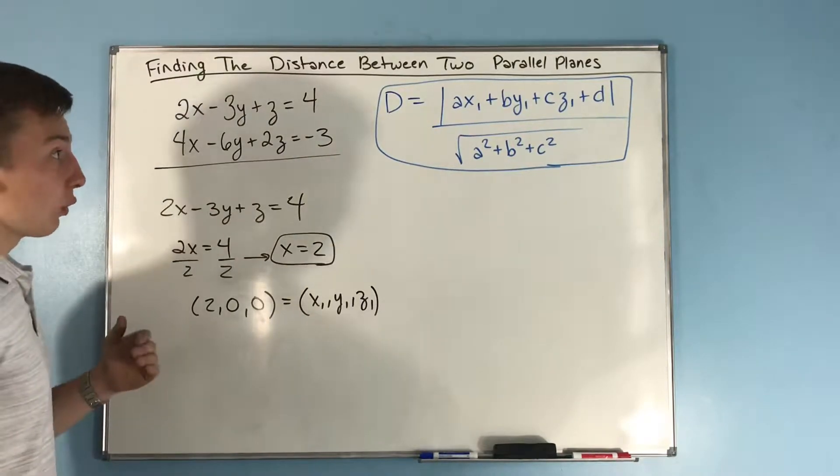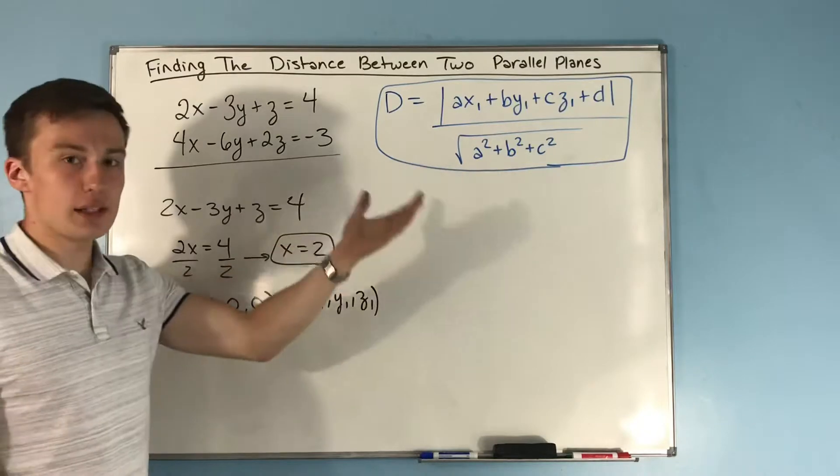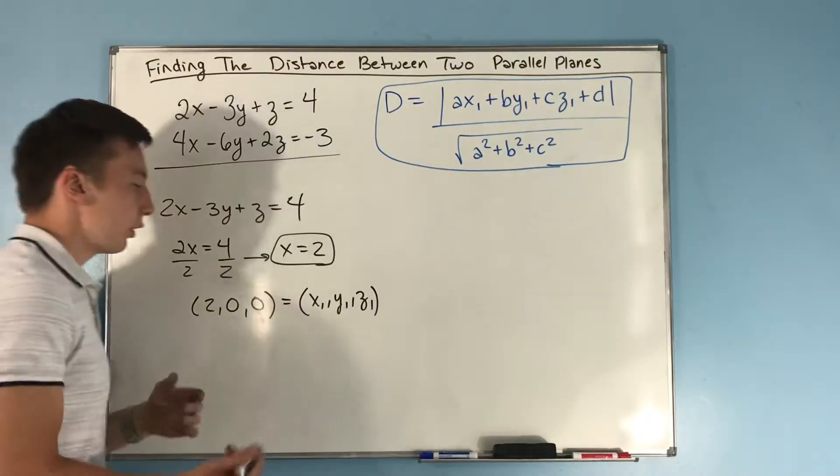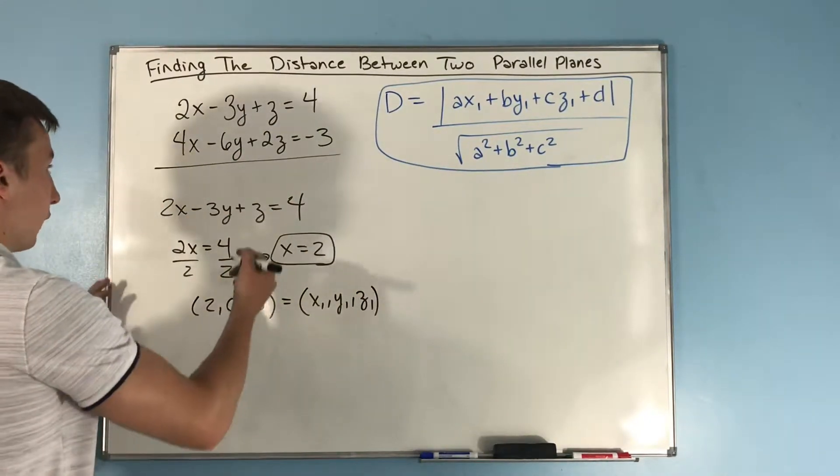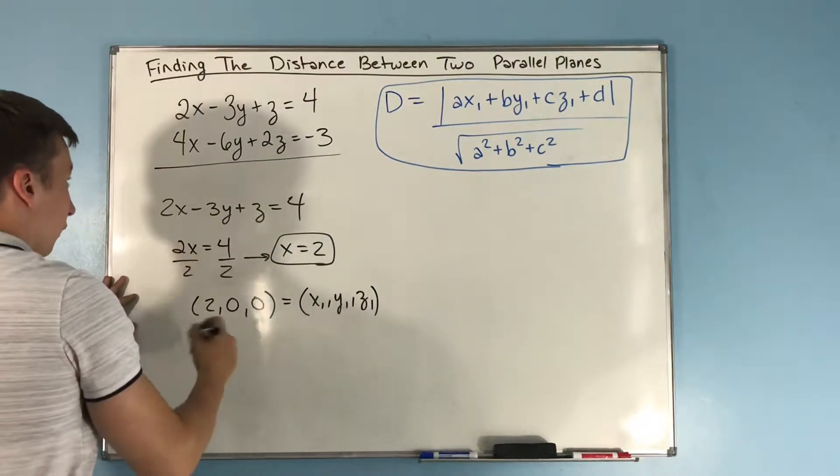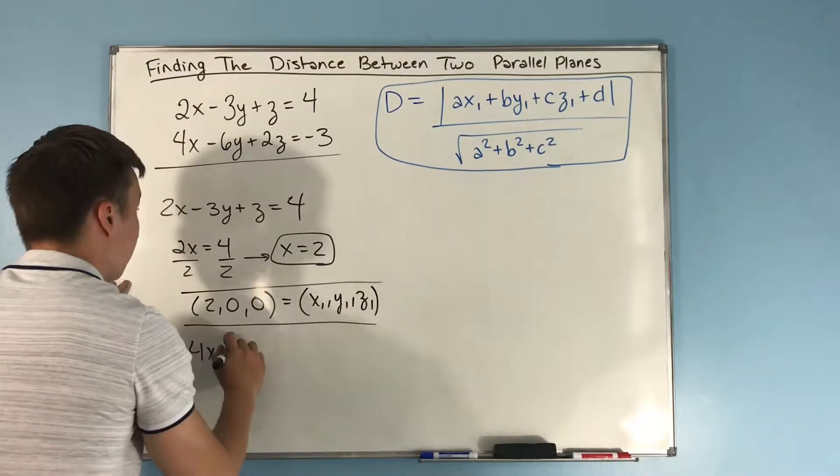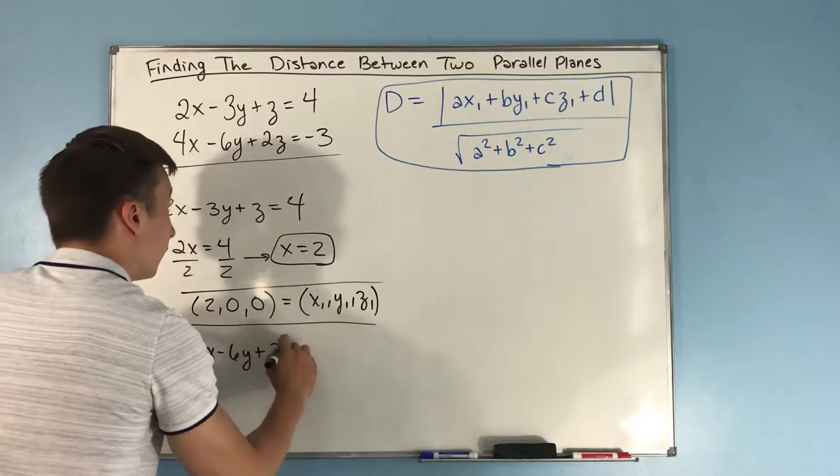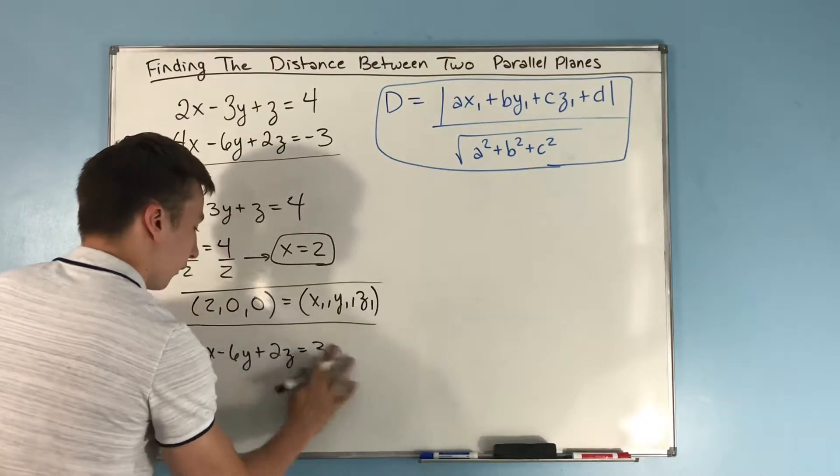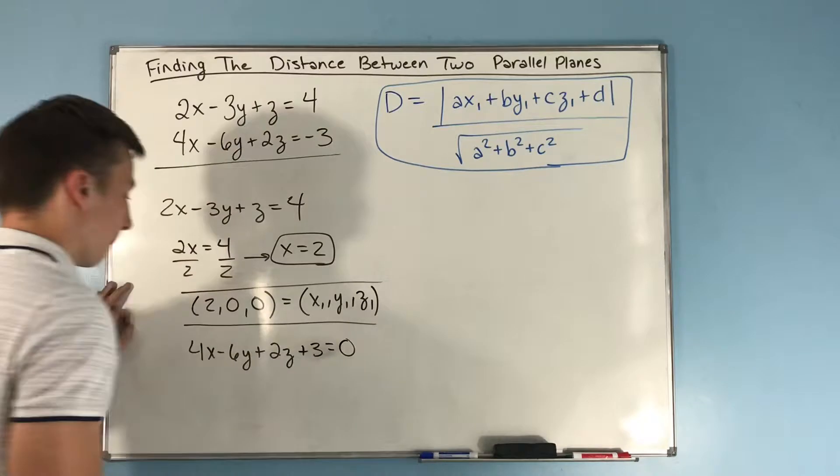We need to find the normal vector, or we could just figure out what a, b, c, and d are for this vector. If you add 3 to both sides here, you get 4x - 6y + 2z + 3 = 0.